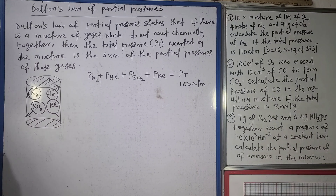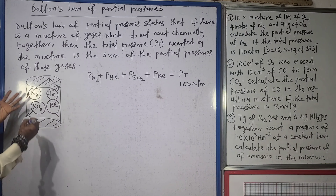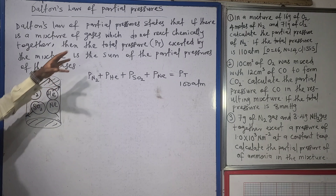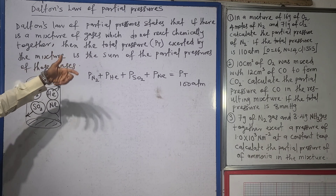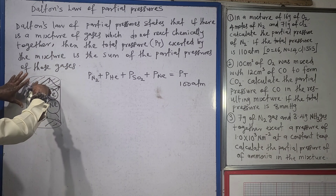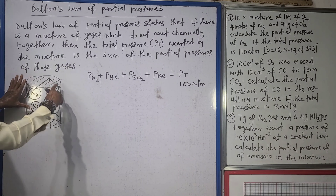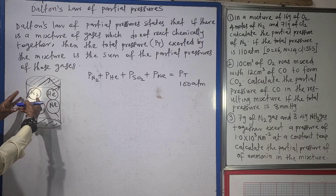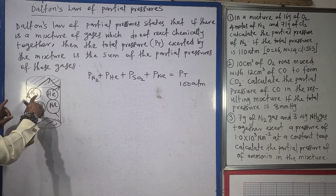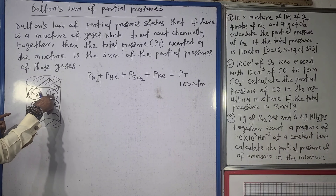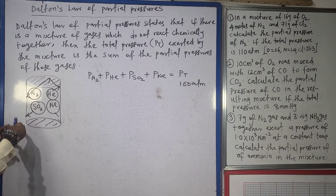Dalton's Law of Partial Pressure states that if we have a mixture of gases which do not react chemically together, then the total pressure exerted by this mixture is the sum of the partial pressures of the individual gases.